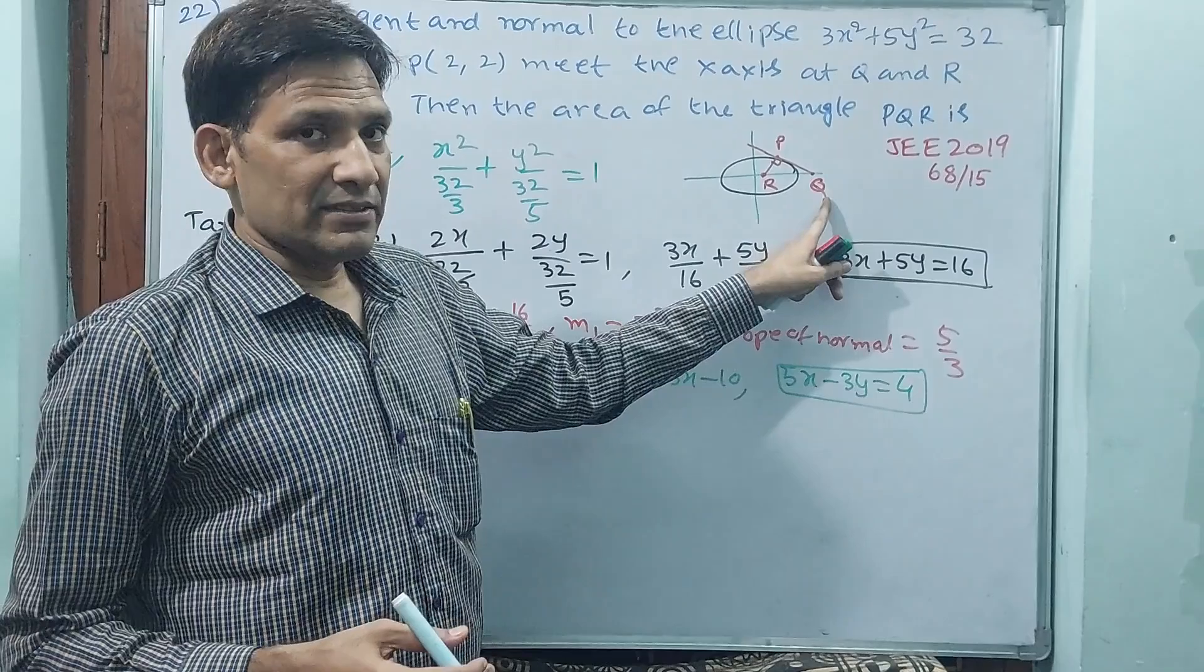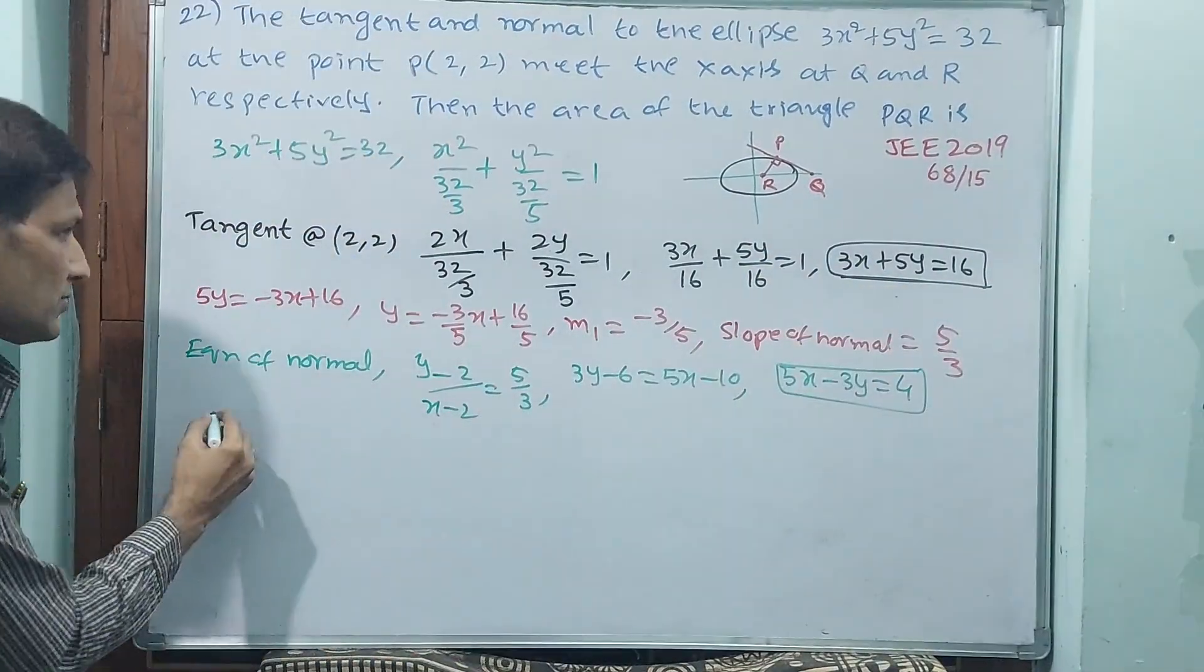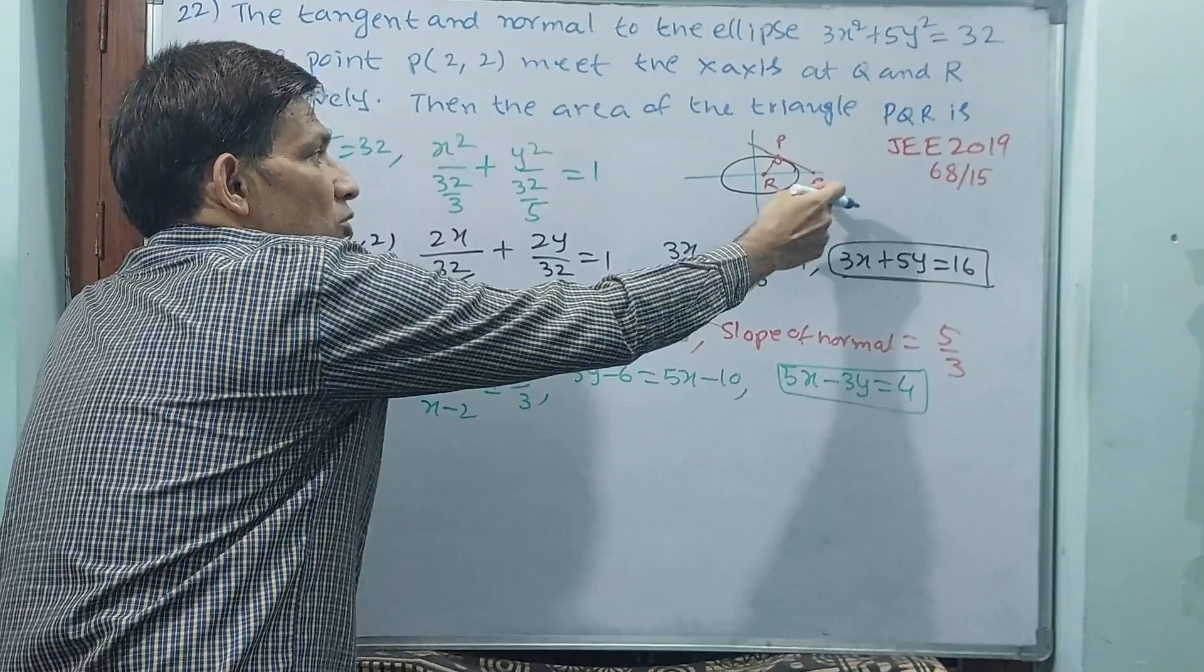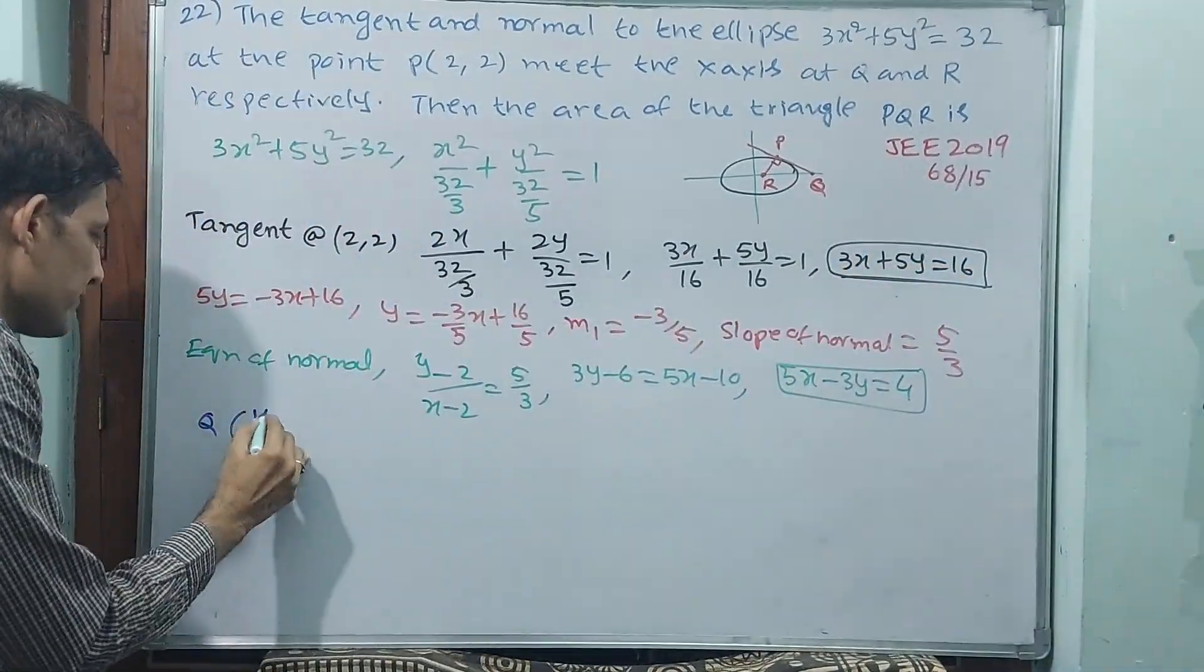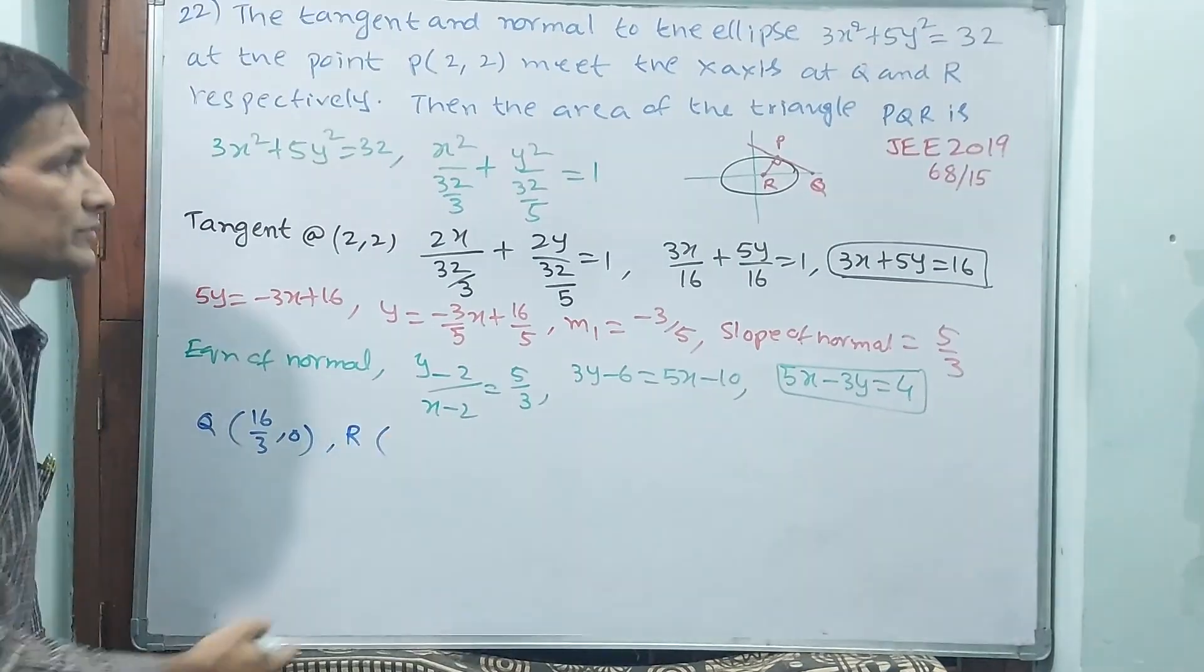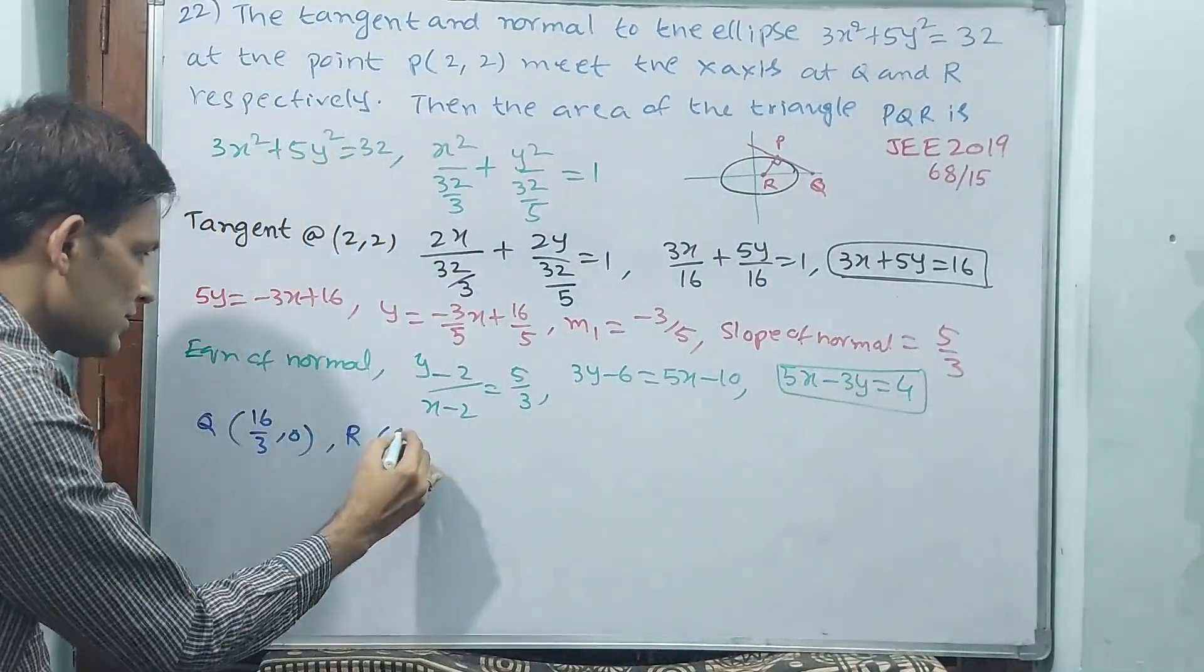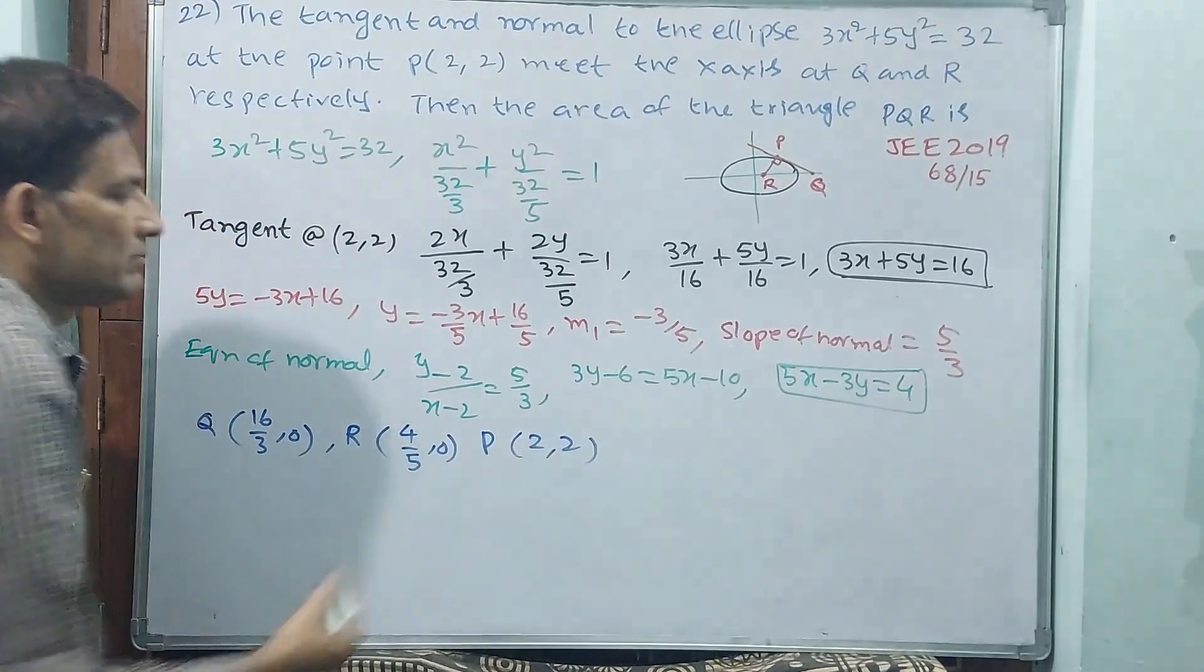Tangent equation, if you apply y is equal to 0, you will get x value coordinate. Point Q, y is equal to 0. If y is equal to 0, automatically x is equal to 16/3. R, R means normal equation. In normal equation y is equal to 0, x is equal to 4/5. 4/5, 0, and what is your P? P is 2 comma 2.